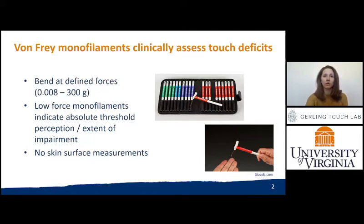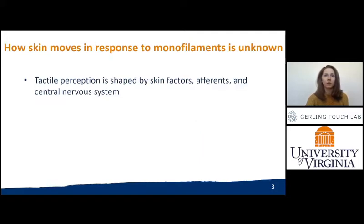However, while monofilaments are prescribed to bend at defined forces, there are no empirical measurements of the skin surface's response. The skin surface is the point of origin for encoding touch information. Our perceptions of tactile acuity are shaped by some combination of factors involving the skin, afferents, and various elements of the central nervous system.